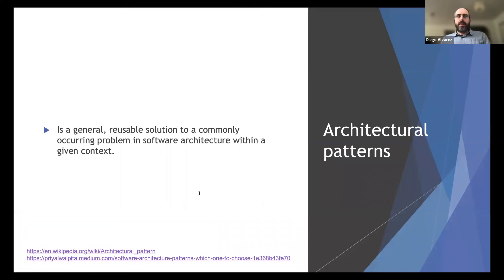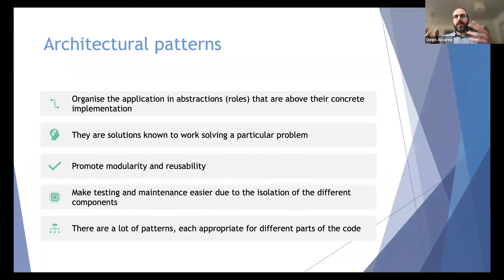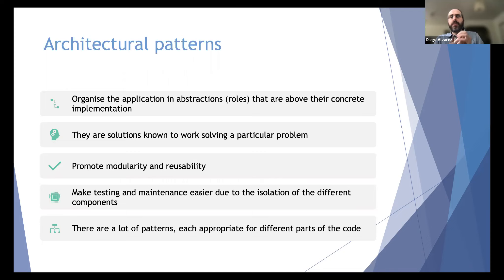According to Wikipedia, an architectural pattern is a general reusable solution to a commonly occurring problem in software architecture within a given context. In our case, the context is graphical user interfaces. In practice, this means you organize your application in abstractions and roles — regardless of whether we're talking about code, data, imperative or declarative programming — the important thing is what role that part of the software is doing.